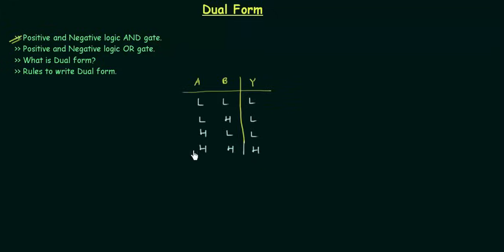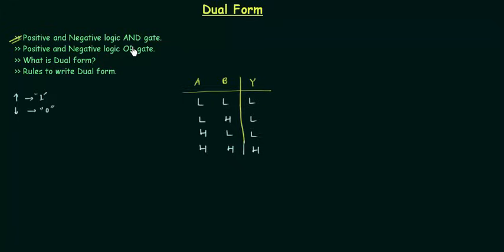This is the simple AND gate. Now we have to find out the positive logic AND gate and negative logic AND gate. In positive logic, low corresponds to zero and high corresponds to one. In negative logic, the higher value corresponds to zero and the lower value corresponds to one.